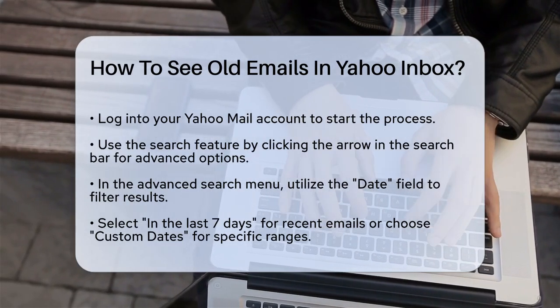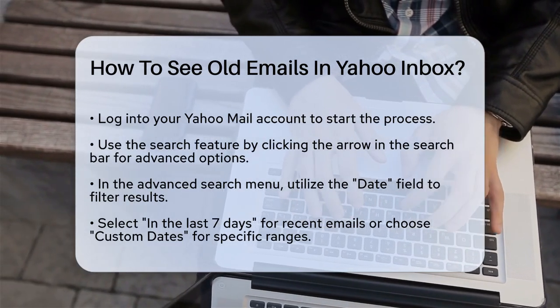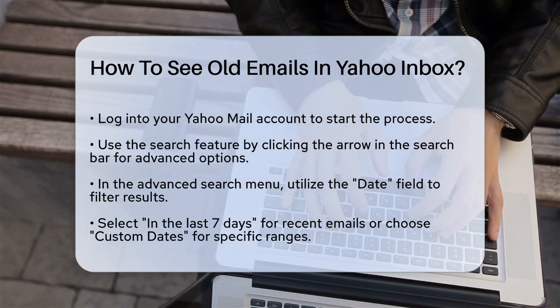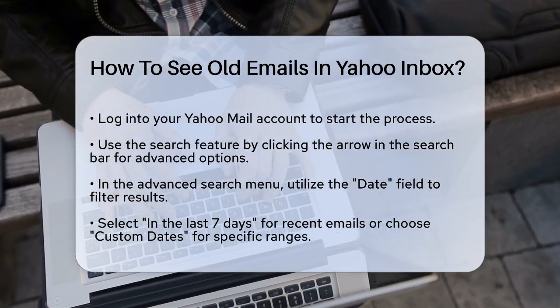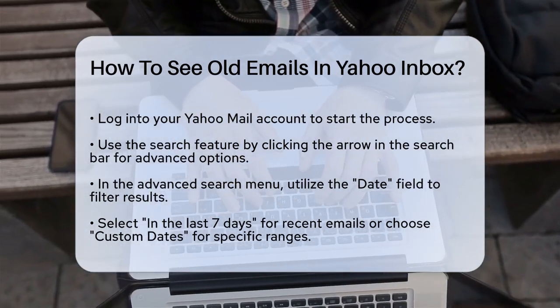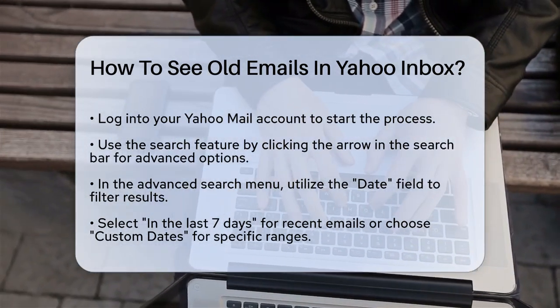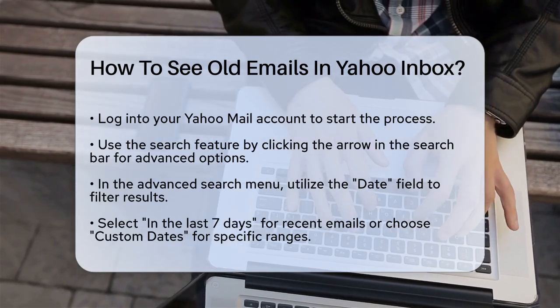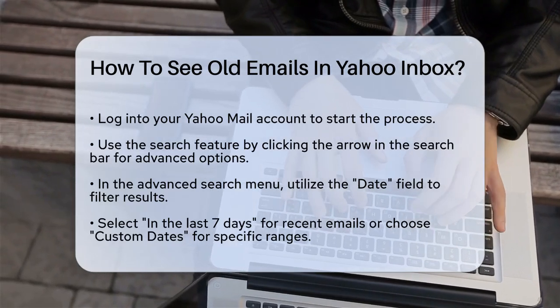Click on the arrow in the Yahoo Mail search bar to open the advanced search options. In the advanced search menu, go to the date field and select 'in the last 7 days' if you're looking for emails from the past week.